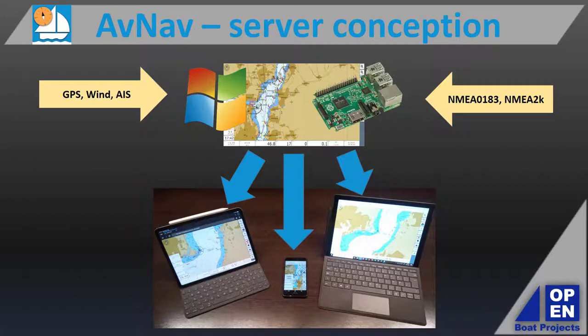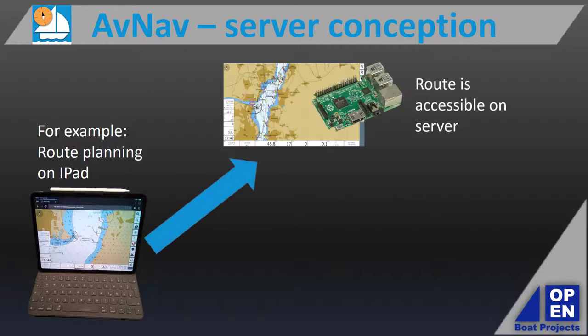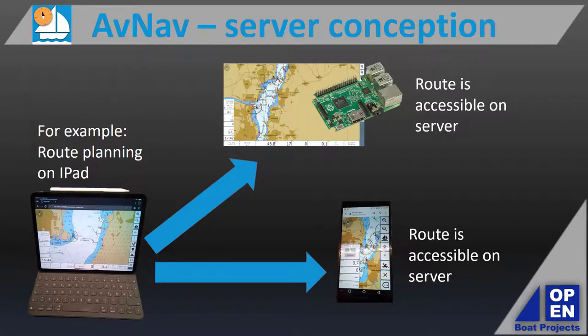AvNav's developer is a sailor himself. He came up with the server idea for easy access from multiple devices. For example, one can make up a route for navigation and the person behind the tiller — the helmsman — would immediately get it on their device. That feature can be deactivated if not wanted.